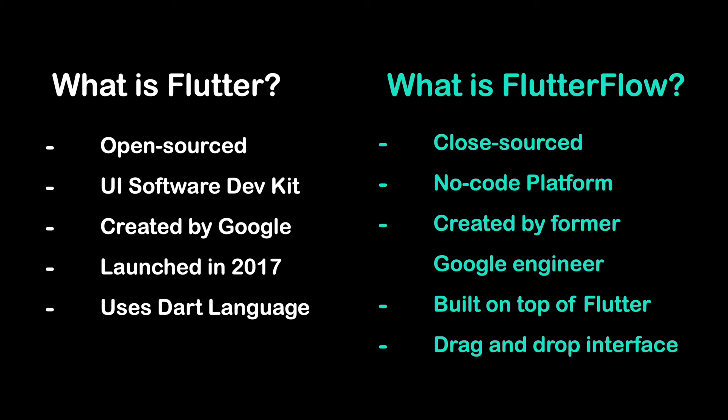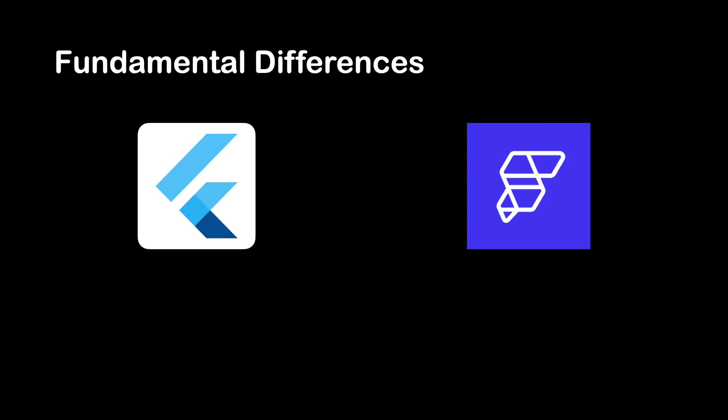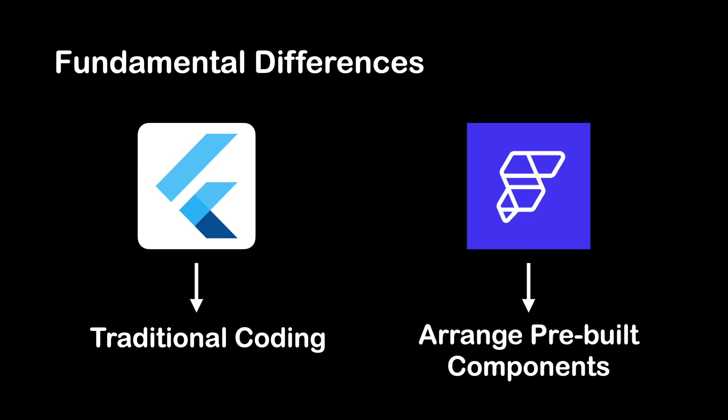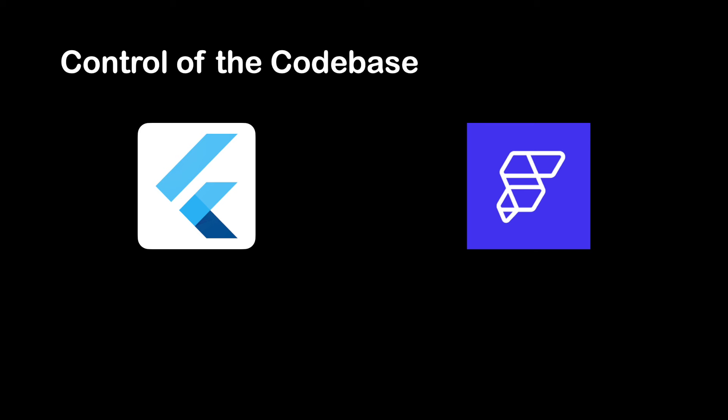Using a simple drag-and-drop interface you can build a fully functioning app in as little as an hour. Flutter follows a traditional coding approach where you are required to write code to define the app's behavior, appearance, and functionality — including network requests, integrating cloud services, payment gateways, and authentication. FlutterFlow, on the other hand, allows users to design and build applications without manual coding. Instead, users arrange pre-built components such as buttons, forms, and interactive elements to define the structure and functionality directly in the platform, which then automatically translates these actions and generates the underlying code.